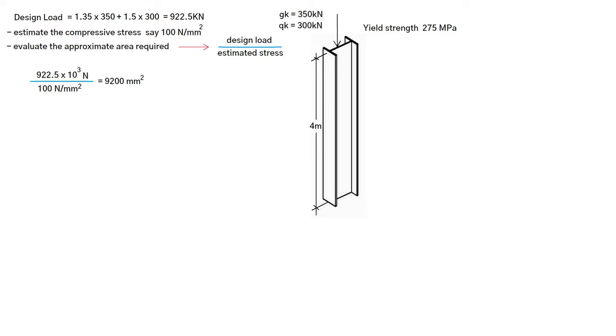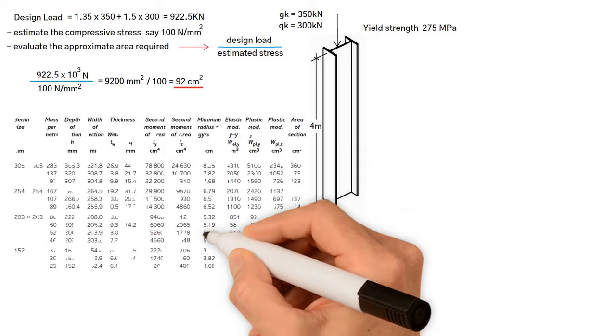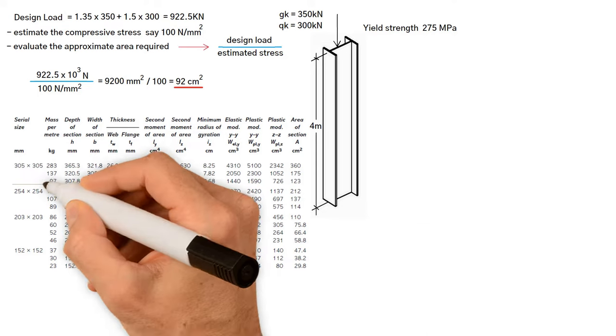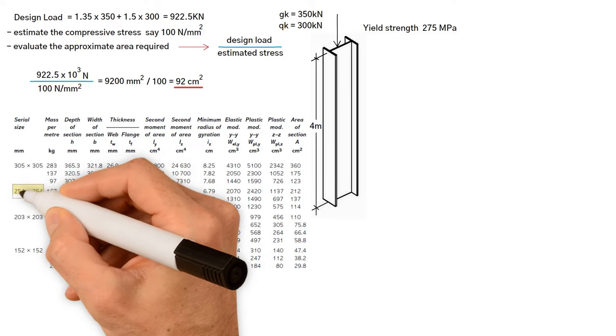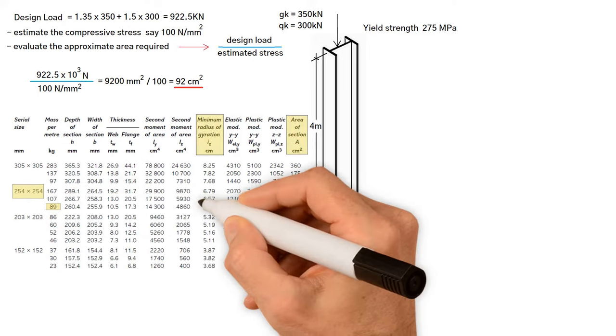We need to convert this to centimetre squared. To do this, we divide 9200 by 100, and this gives us 92 centimetres squared. Then, we need to select a suitable column section size from the table, and evaluate the non-dimensional slenderness. Let's try 254 by 254, 89 kilogram per metre universal column which has the following properties.